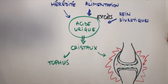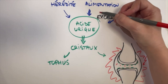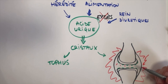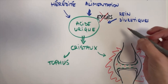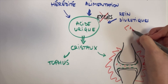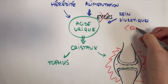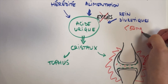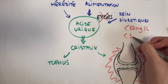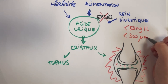Pour éviter les crises de goutte, une seule solution : diminuer l'acide urique, empêcher son excès. Pour cela, des médicaments existent et vont avoir pour objectif de diminuer le taux d'acide urique mesuré dans l'analyse de sang en dessous de 50 mg par litre ou 300 micromoles par litre.